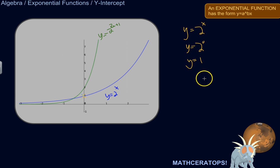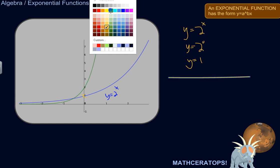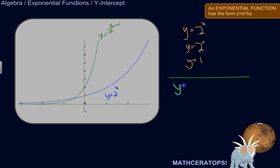Let's try this one. y equals 2 to the power of 2x plus 1. Let's plug in 0 for x.